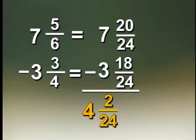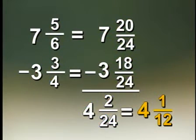18, because 3 times 6 is 18. So now I subtract 20 minus 18 is 2, so 2 24ths, and 7 minus 3 is 4. 4 and 2 24ths, well, that can be reduced. The 2 24ths, both of those are even numbers. I divide top and bottom by 2, and I get 4 and 1 12th.